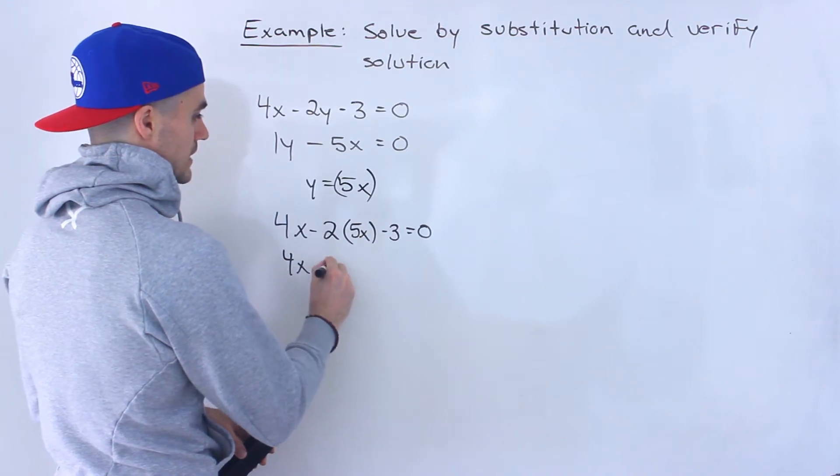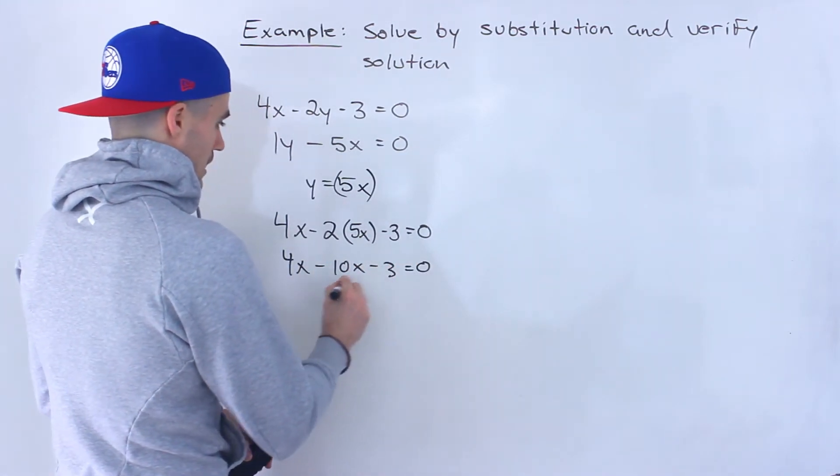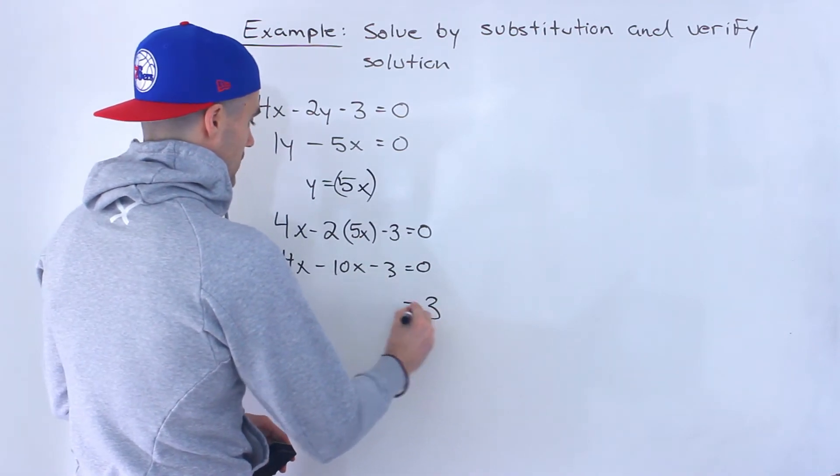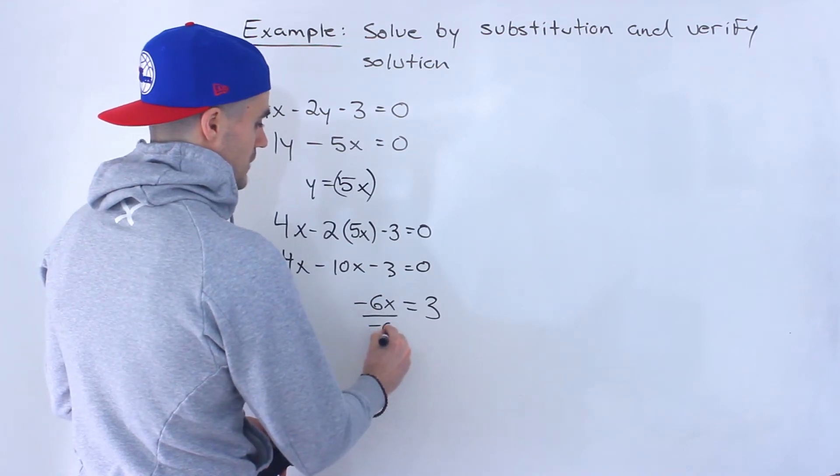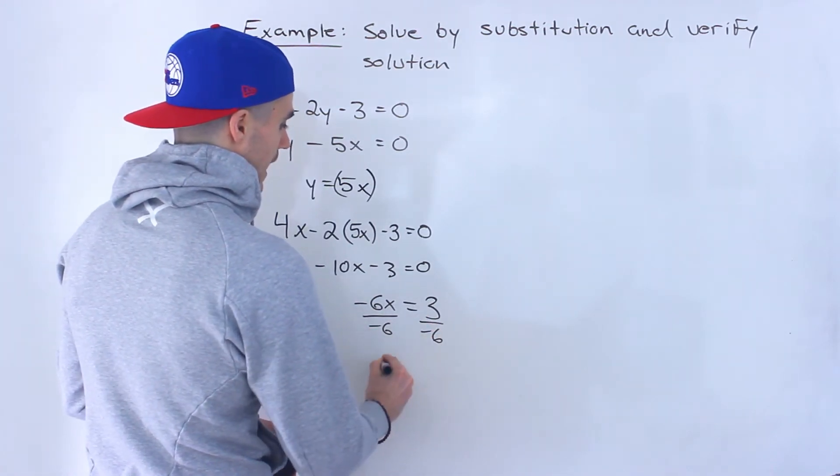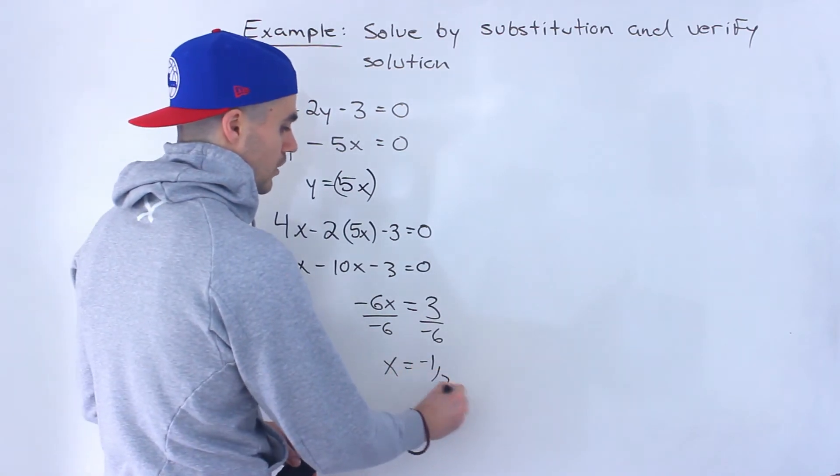So we'll have 4x minus 10x minus 3 equals 0. Bring the 3 over to get positive 3. 4x minus 10x gives us negative 6x. Divide both sides by negative 6, so x equals negative 3 over 6, which is negative 1 over 2.